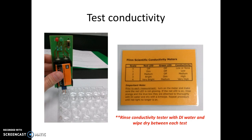It's important that you rinse the electrodes between each test. As you go from one solution to the next, rinse the electrodes with deionized water and wipe them off with a paper towel. This is important to prevent contamination during your conductivity testing.